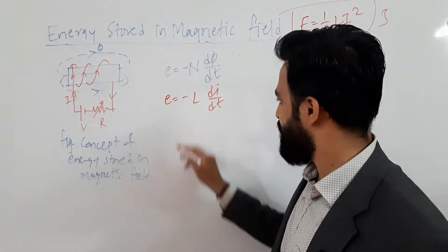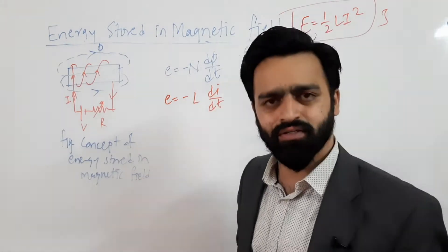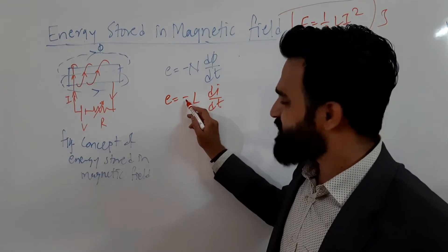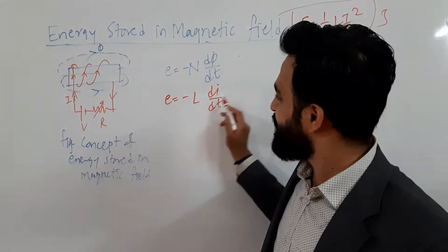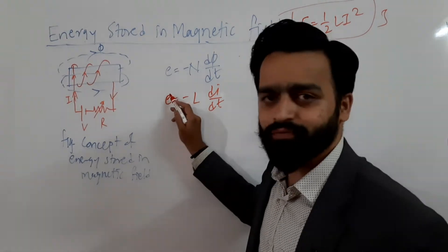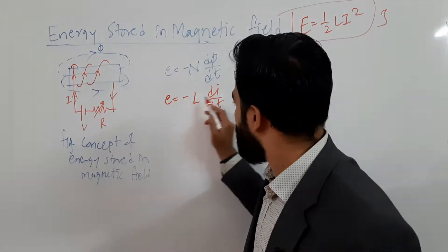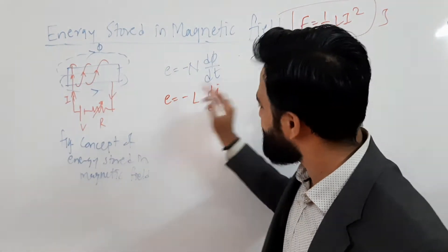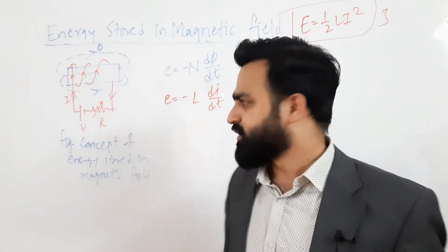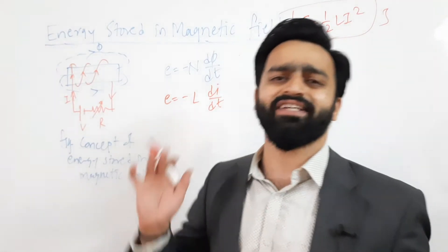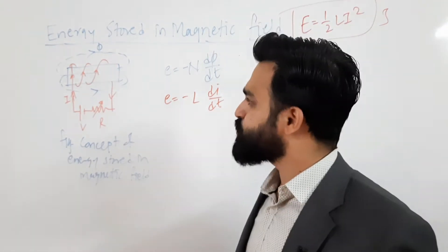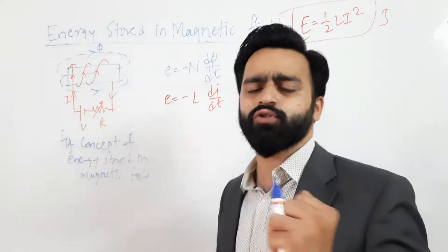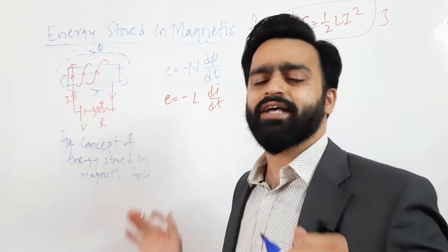We have used this equation e = -L·di/dt as the base for our derivation. Now, this minus sign means the induced EMF is opposing the cause responsible for the change in current. In order to counterbalance this induced EMF, the source voltage has to put in some additional energy, because the source wants to maintain the current.